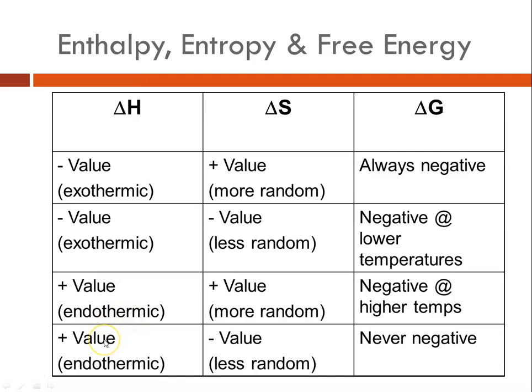And if delta H is positive endothermic reaction, delta S is negative, randomness decreased, it will never be negative, so it will never be spontaneous. So for what we've just been talking about here, it's helpful if you look at the equation, remembering that delta G equals delta H minus T delta S.